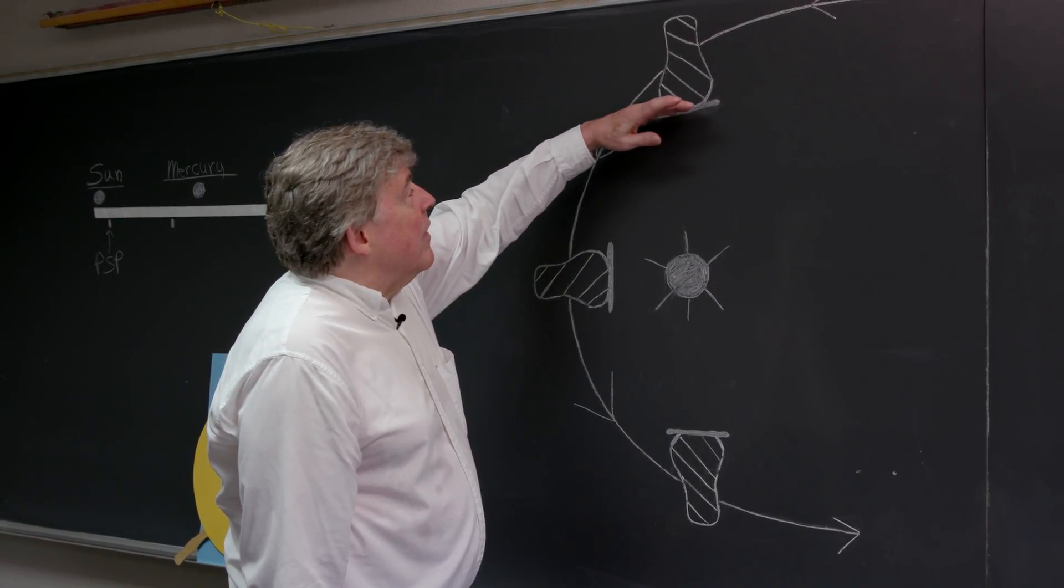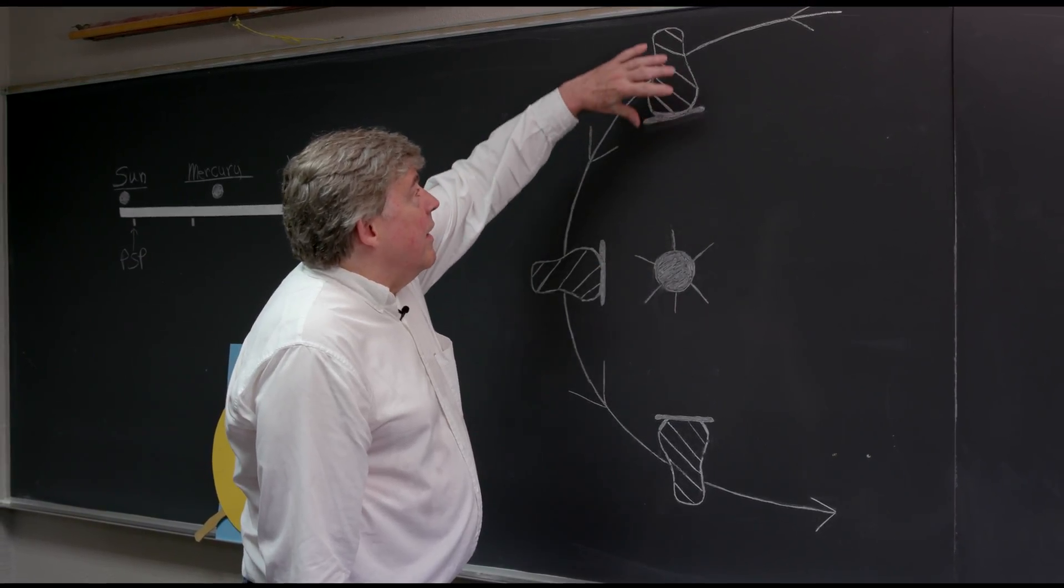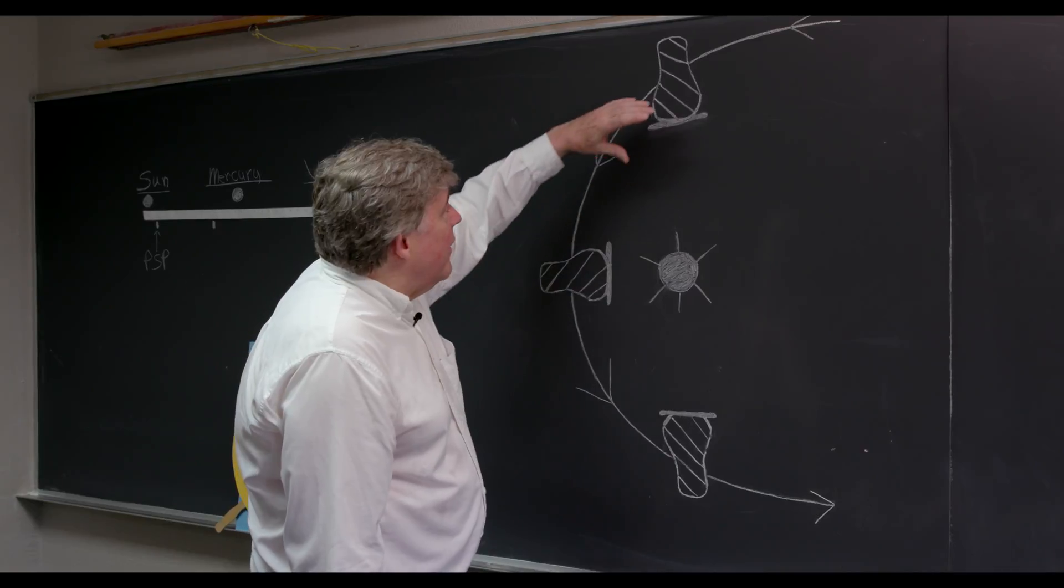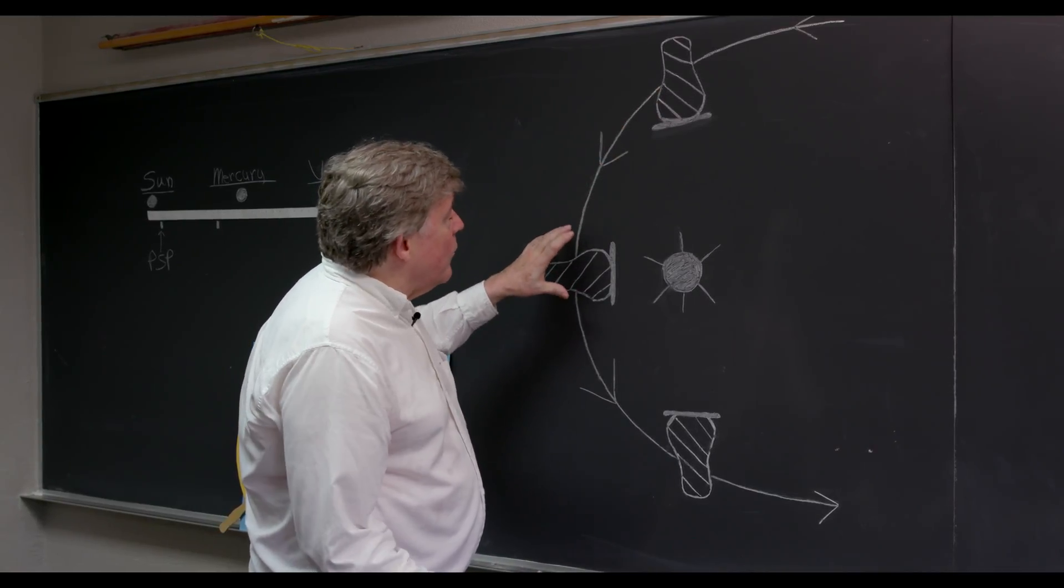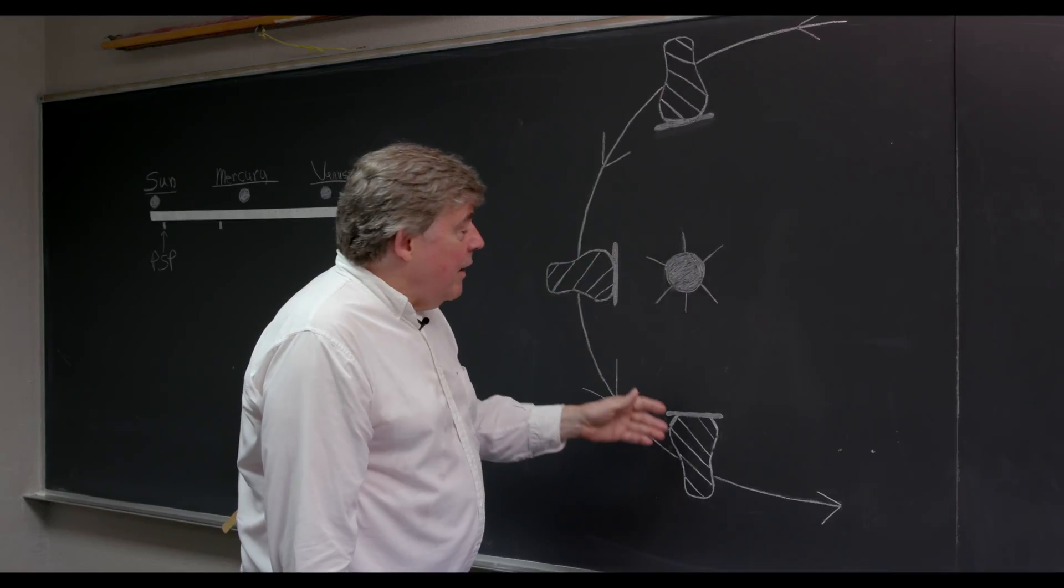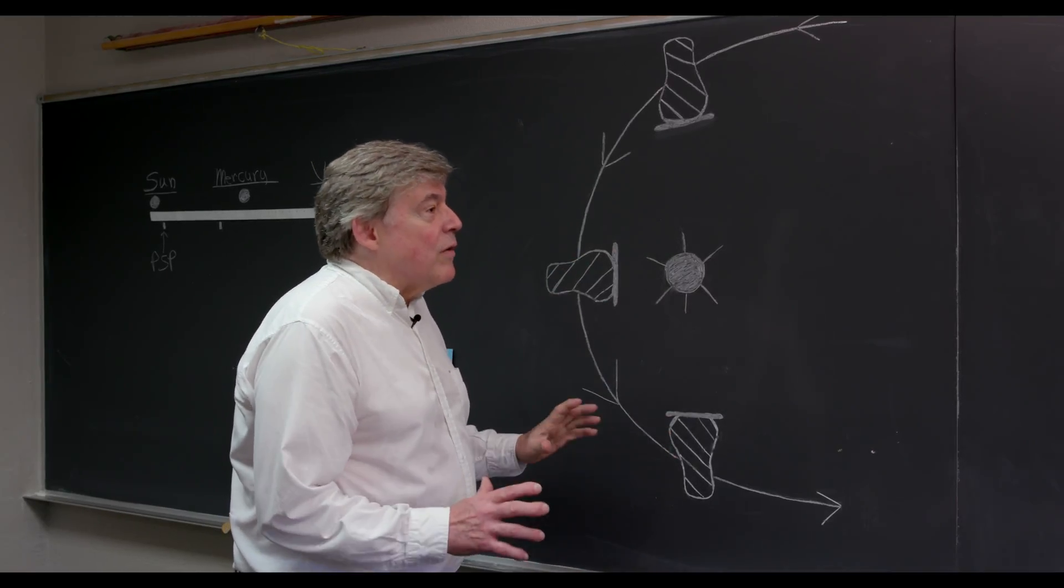The heat shield is kept between the spacecraft body and the Sun at all times as we come through perihelion. We were coming through perihelion here, the spacecraft changes its attitude or its orientation such that the heat shield is always between the Sun and the spacecraft body. So that's a terrific thing.